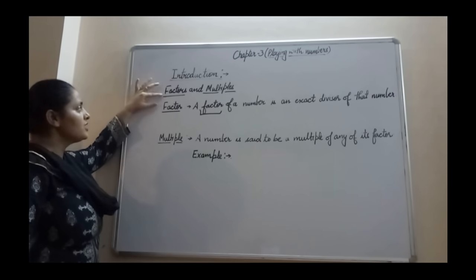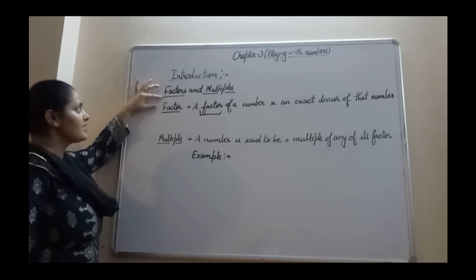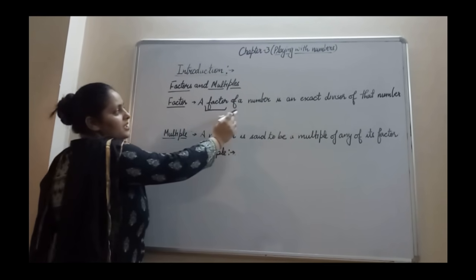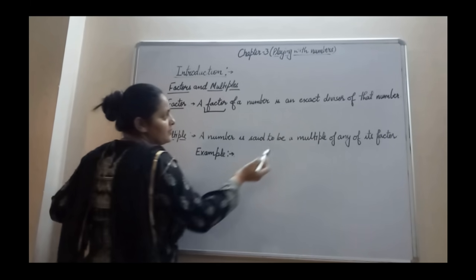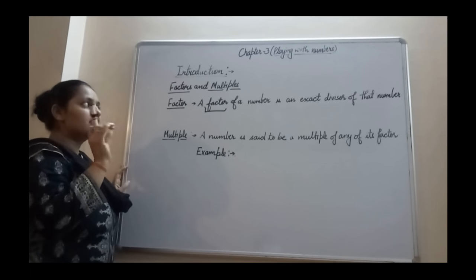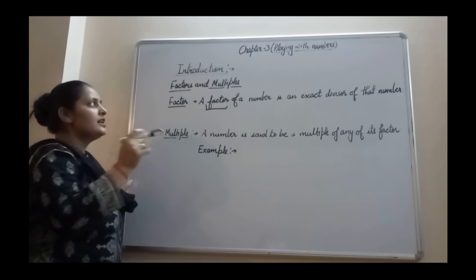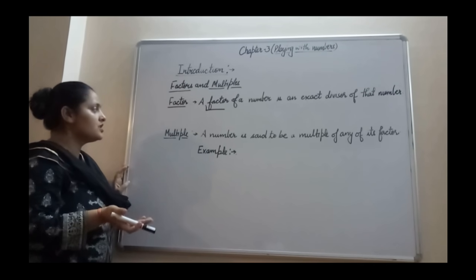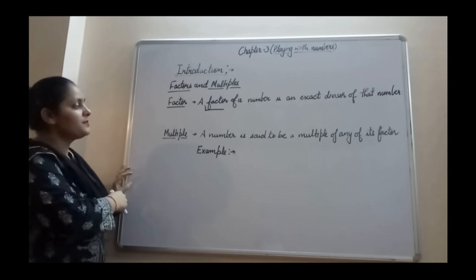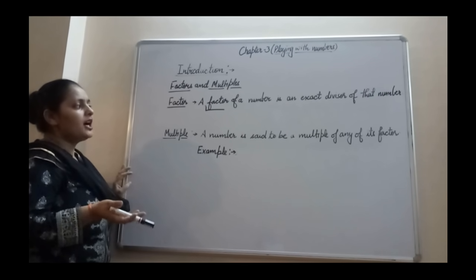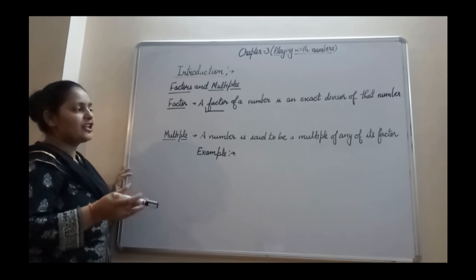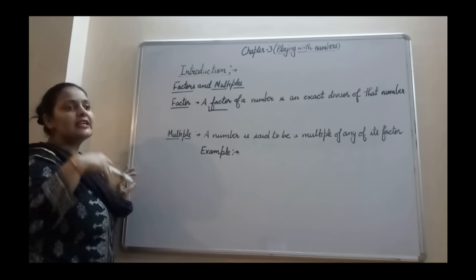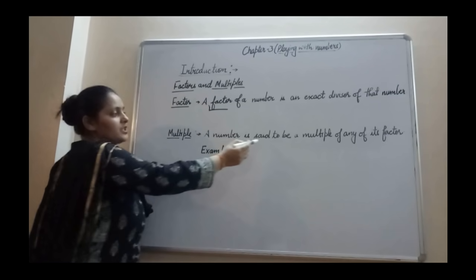The first two terms which you are going to learn in this chapter are factors and multiples. A factor of a number is an exact divisor of that number — meaning when you divide a given number, the factor exactly divides it leaving remainder 0. A number is said to be a multiple of any of its factors, meaning when you multiply a factor with any number, your product is always the multiple.